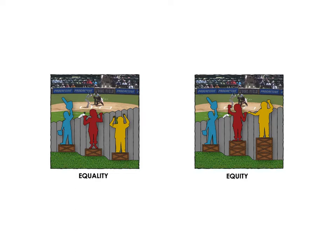Returning to the diagrams depicting equality and equity: the structure itself — the fence and the ground — isn't necessarily unequal; it's just a structure. But it's the way that the distribution of resources plays out for different people on top of that structure that produces an unequal experience. This is why theorizing differences around equality and equity becomes important.